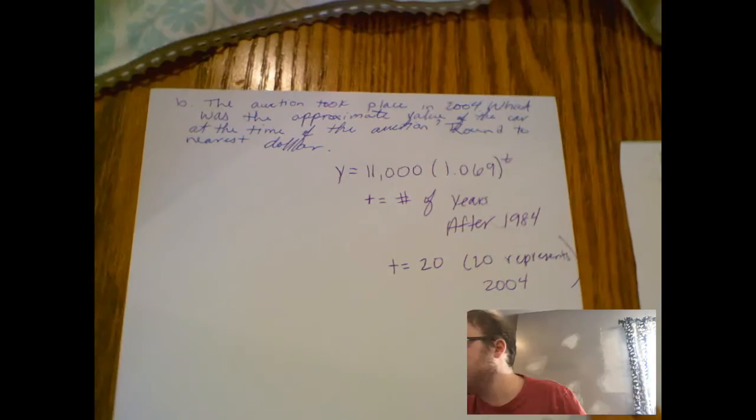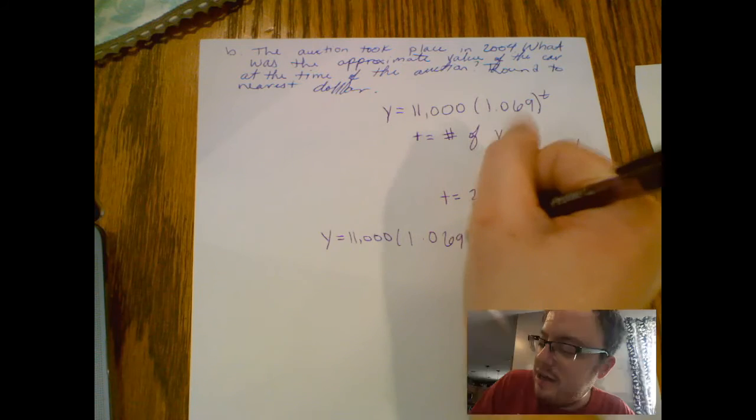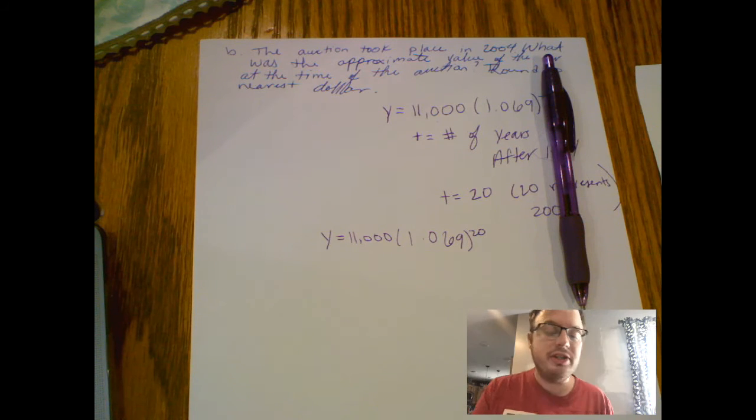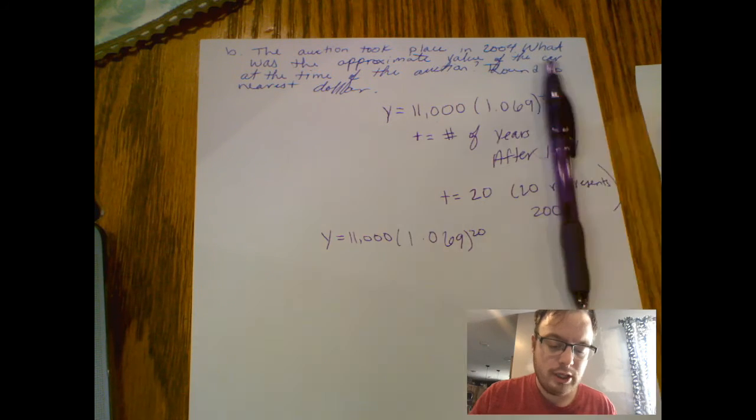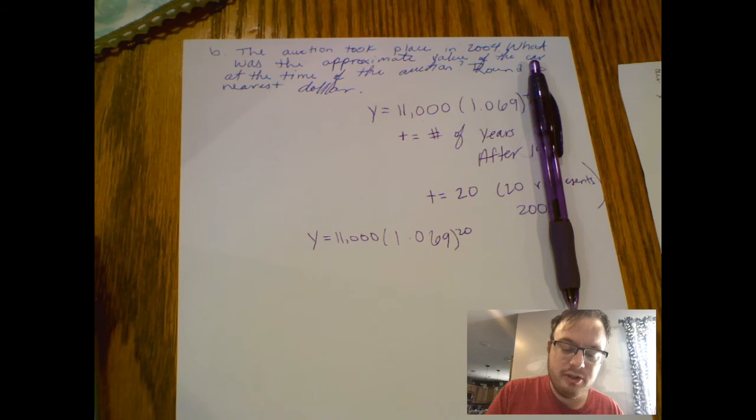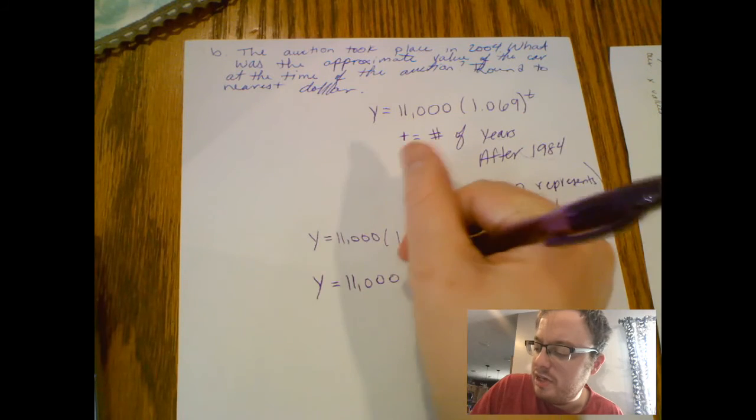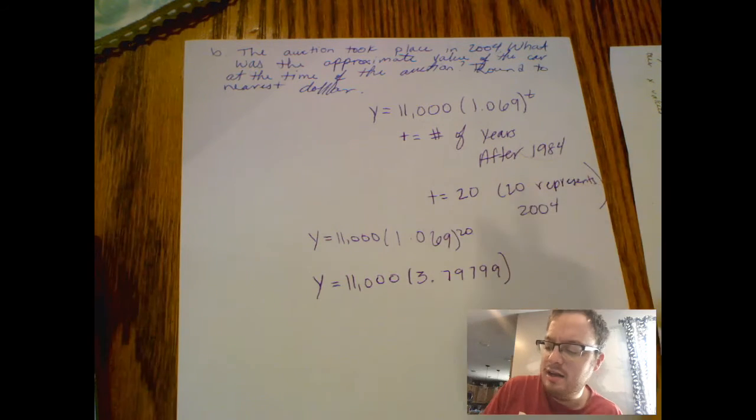If I do this, it would be y equals 11,000 times 1.069 to the 20th power. At this point I don't expect you to know what 1.069 to the 20th power is, but I'll calculate it. 1.069 to the power of 20, this changes to: y equals 11,000 times 1.069 to the 20th power, which is 3.79799 and it goes on.